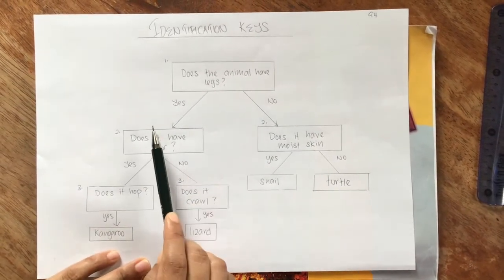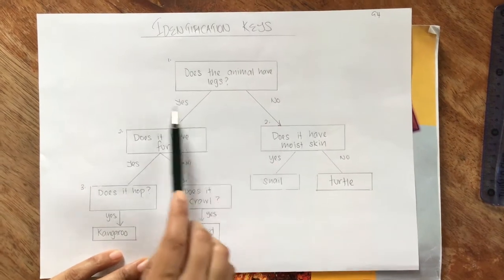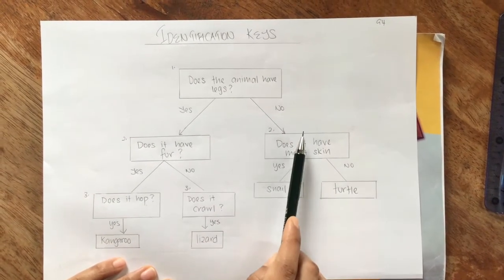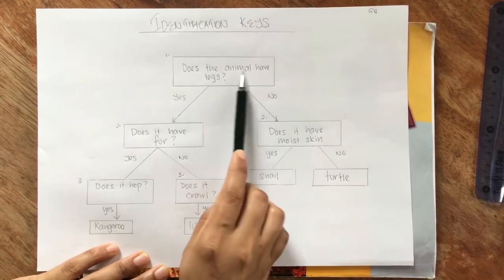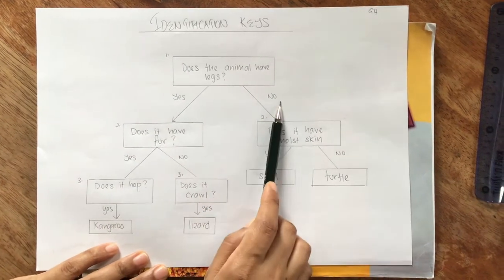The first question here had yes and no. We have done the yes. Let's move to the no. Does the animal have legs? No, it doesn't.